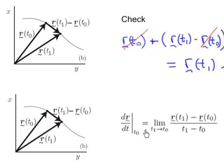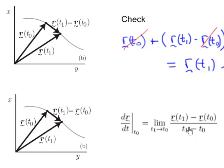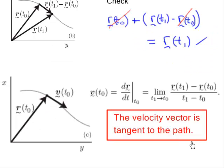Applying my definition of the derivative of the position vector, in the numerator I have the difference between the position vectors — that difference vector. In the denominator I have a difference in times, and I'm taking the limit as t1 approaches t0. As I let t1 approach t0, this point gets closer and closer to the original point, and that vector difference gets really small. But the time difference is also getting small, so in the limit this quotient generally does not go to zero. The important observation is that as the point at t1 goes to the point at t0, this vector difference approaches something that is tangent to the path.